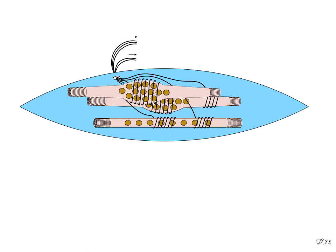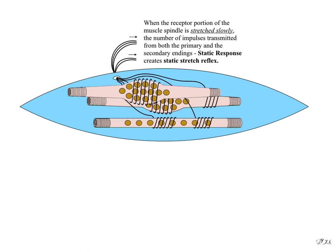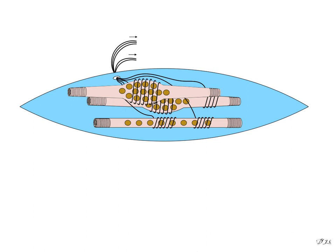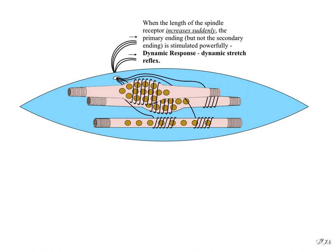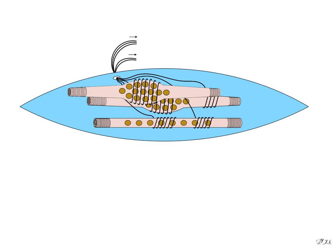When the receptor portion of the muscle spindle is stretched slowly, the number of impulses transmitted from both the primary and secondary endings is called the static response, which creates the static stretch reflex. When the length of the spindle receptor increases suddenly, the primary ending — but not the secondary ending — is powerfully stimulated; this is called the dynamic response, which creates the dynamic stretch reflex.